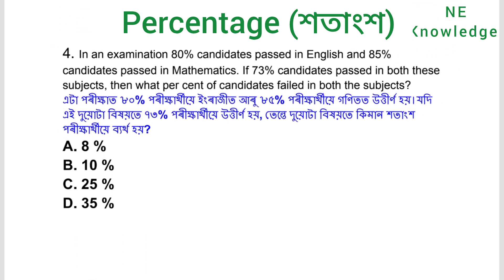Question number four: If 73% of candidates pass in English and 85% of candidates pass in mathematics, and 73% of candidates pass in both of these subjects, then what percentage of candidates fail in both subjects?